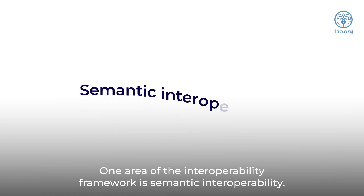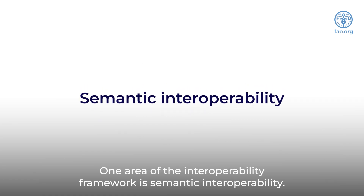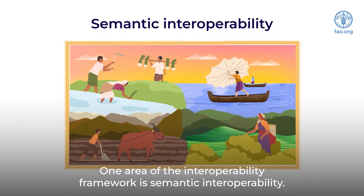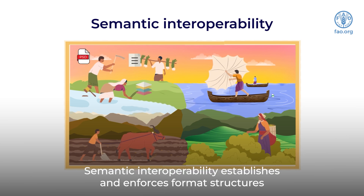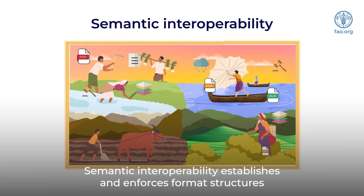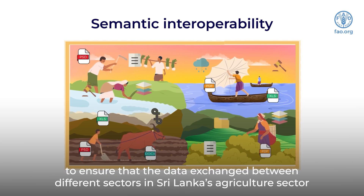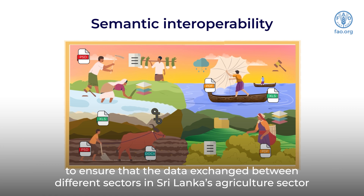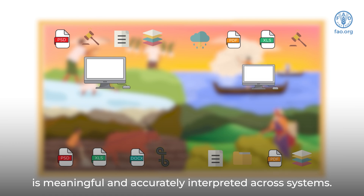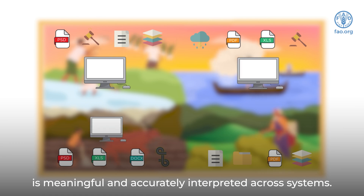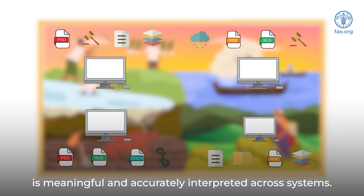One area of the interoperability framework is semantic interoperability. Semantic interoperability establishes and enforces format structures to ensure that the data exchanged between different sectors in Sri Lanka's agriculture sector is meaningful and accurately interpreted across systems.